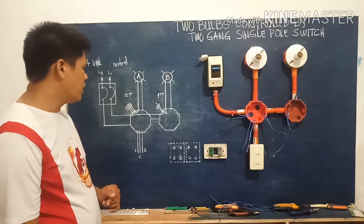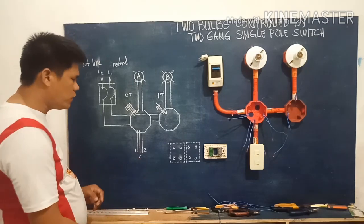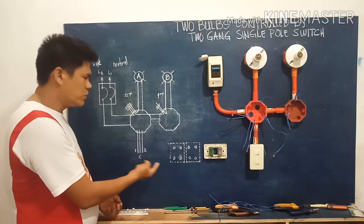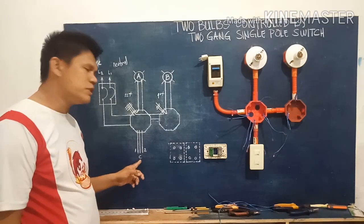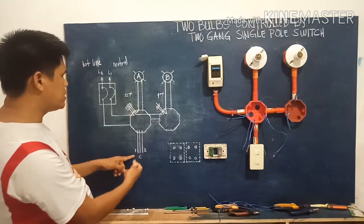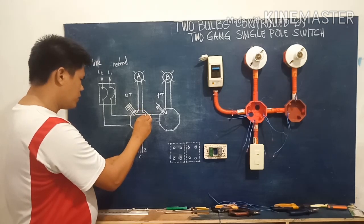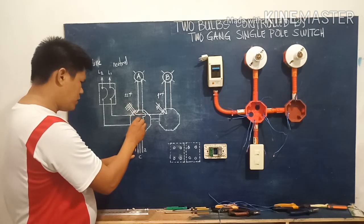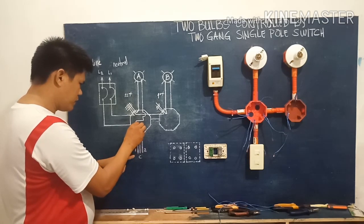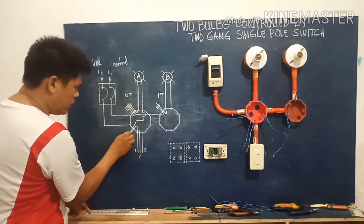Now in the second cycle, we have the two-gang single pole switch. As you can observe, we only have three wires: terminal one, terminal two, and the common terminal. The common terminal is intended for the third cycle. In the second cycle, bulb A can be controlled — this is for switch one — so we will use this wire here. That is for bulb A, giving us two wires in the second cycle.